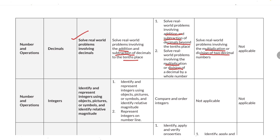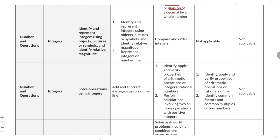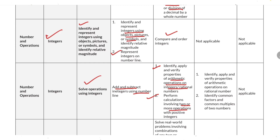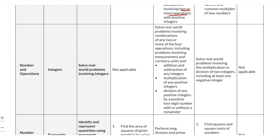Next is integers. You need to identify and represent integers using objects, pictures, or symbols, and identify relative magnitude. Questions cover: representing integers on a number line; comparing and ordering integers; adding and subtracting using a number line; identifying, applying, and verifying properties of arithmetic operations on integers and rational numbers; performing calculations involving two or more operations with positive numbers; and identifying common factors and common multiples of two numbers.